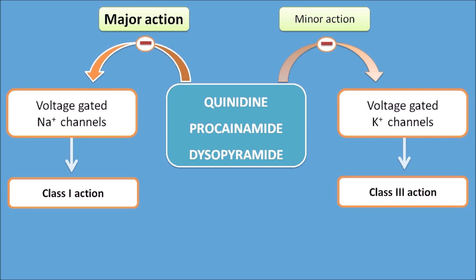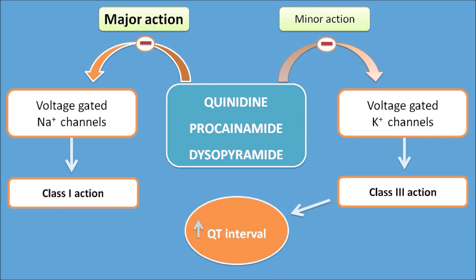This proarrhythmic effect is because of the class 3 action. This class 3 action is responsible for the increase in the QT interval in the ECG, resulting in torsades de pointes.